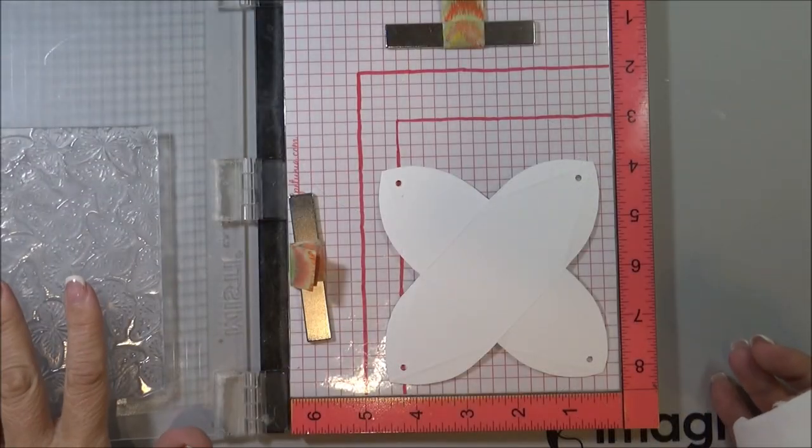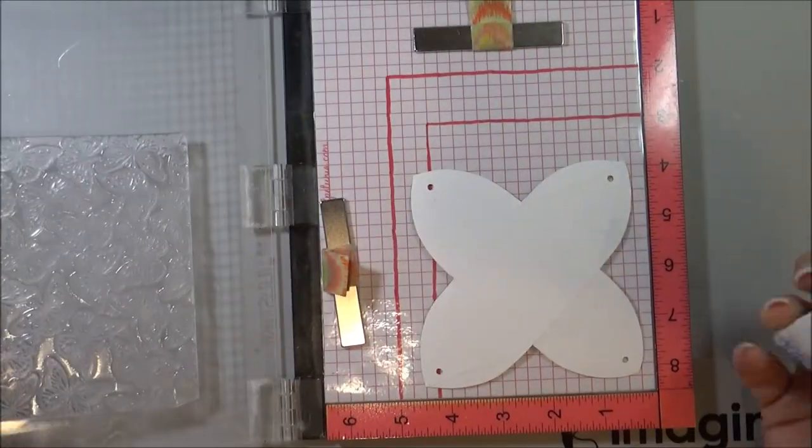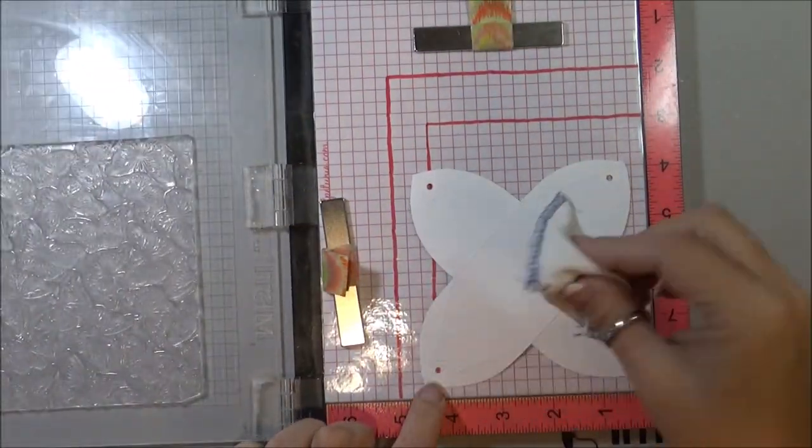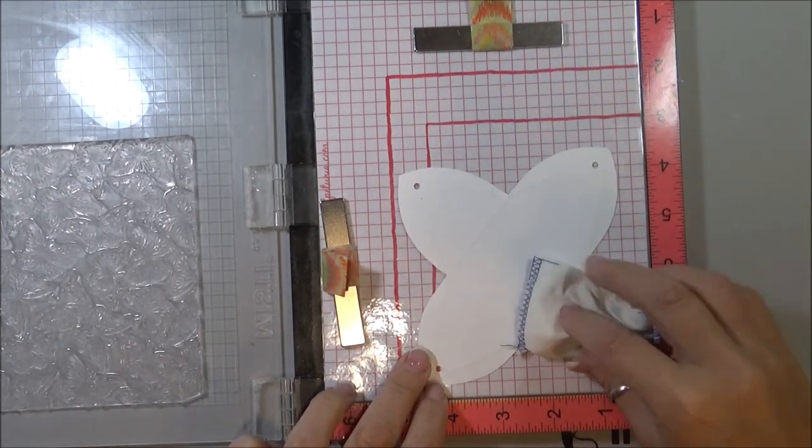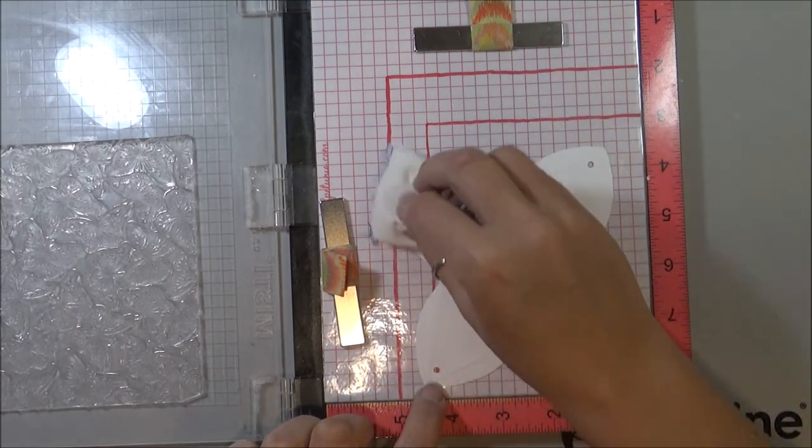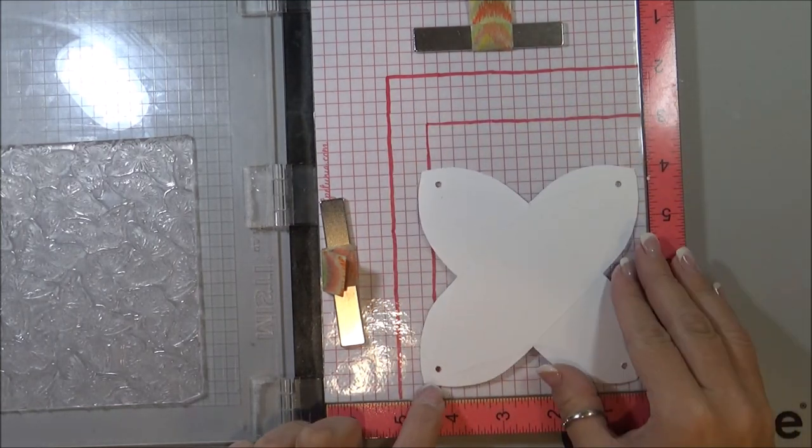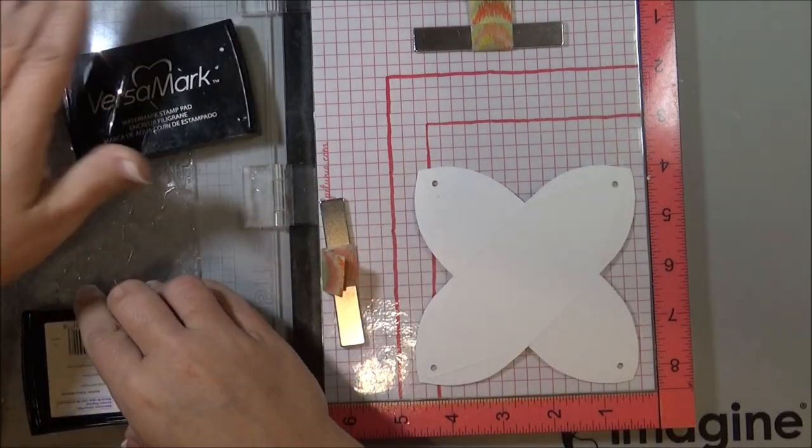So now that I have my stamp in my MISTI, the background stamp on there already. I'm going to take my little embossing buddy tool, or my embossing powder thing here, just to make sure that I don't get embossing powder anywhere where I don't want it. Put that on there. Ink up my stamp with the Versamark.